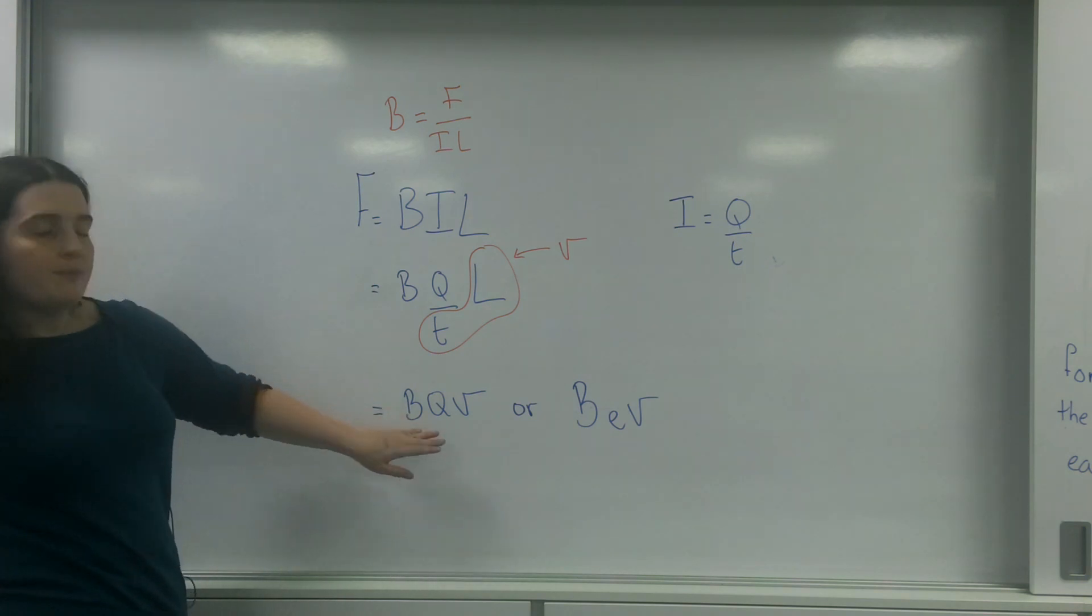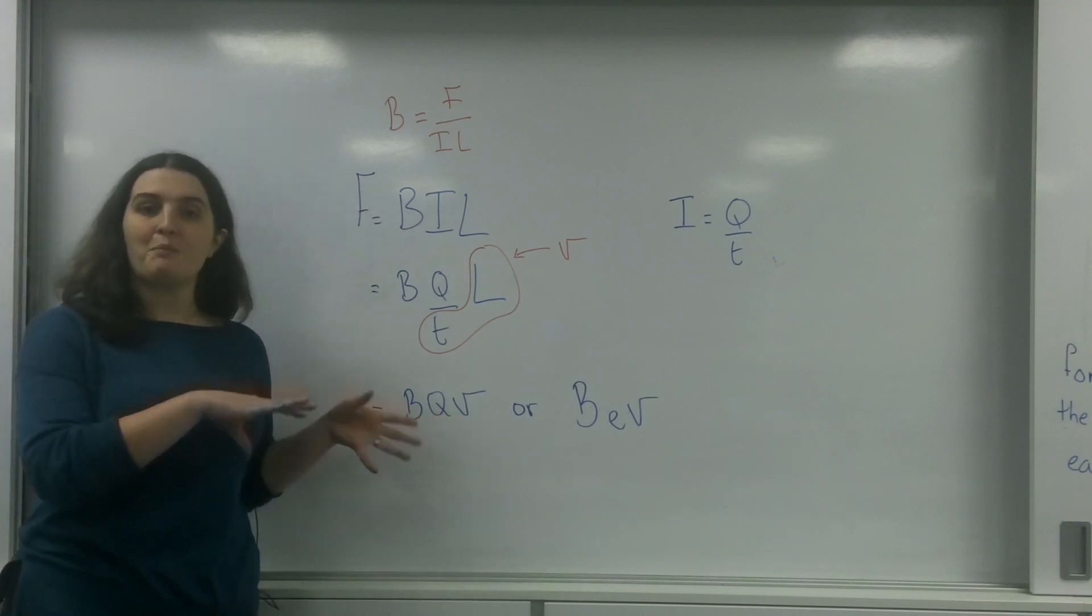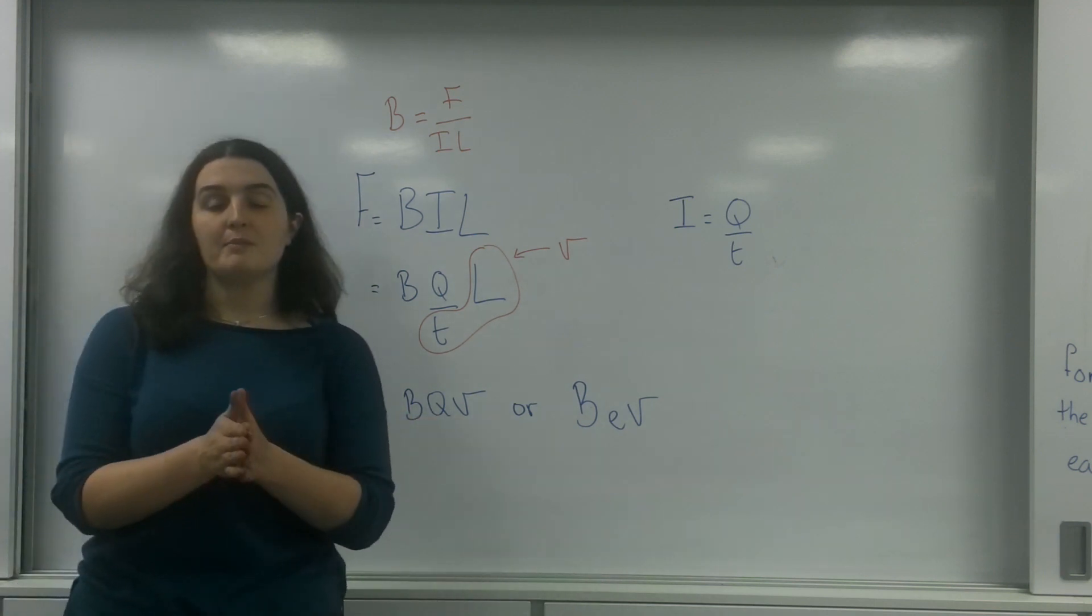Now this equation here, if the magnetic field is magnetic field strength force per moving charge, this one sounds like this one should be the formula that defines magnetic field strength.